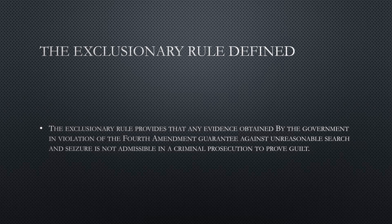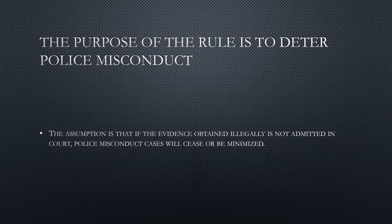We're going to exclude evidence that was illegally obtained — that is the rule. The purpose of the rule, at least on its face, is to deter police misconduct. If we don't admit evidence that was obtained in violation of the Fourth Amendment, that's going to make police misconduct cases go down, because police don't want to waste their time. If they catch a bad guy, they want to make sure that bad guy gets prosecuted, so they don't want to overstep the constitutional limits placed on them.